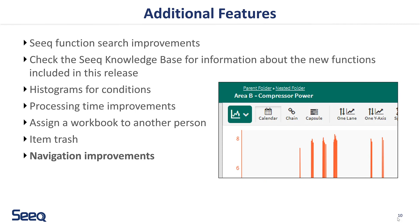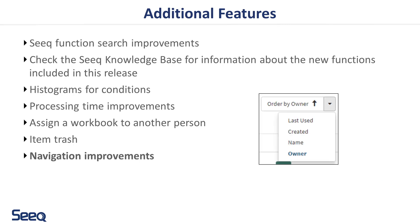We've added two improvements to navigation in SEEK. First, users can now quickly note what folder work is stored in, or jump to a parent folder with the new links at the top of the display toolbar. Second, users can now sort content on the home screen by owner in addition to name, last used, and created.